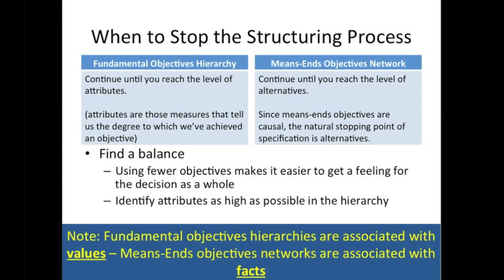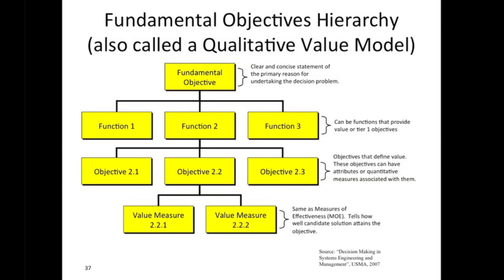Means-ends objectives networks are associated with facts — that's one way of describing the difference between these two types of objectives hierarchies. Here's another way of looking at a fundamental objectives hierarchy, borrowed from my colleague Dr. Greg Parnell, who has been teaching at the U.S. Military Academy's Systems Engineering Department. The fundamental objective is at the top — a clear and concise statement of the primary reason for undertaking the decision problem. Parnell says that the Tier 1 level can be either sub-objectives or functional components of the top-level item.